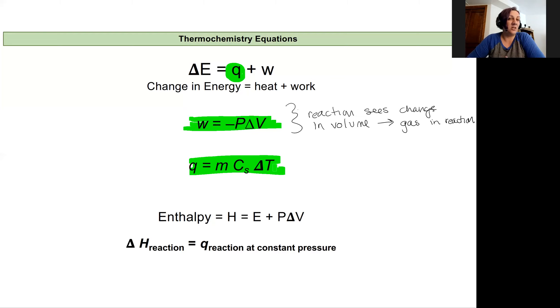We can also calculate heat during a phase change by taking the number of moles of the substance that we have and multiplying it by the enthalpy of vaporization or condensation or fusion. But we use this one a lot when we actually saw that the temperature change rather than it staying constant.